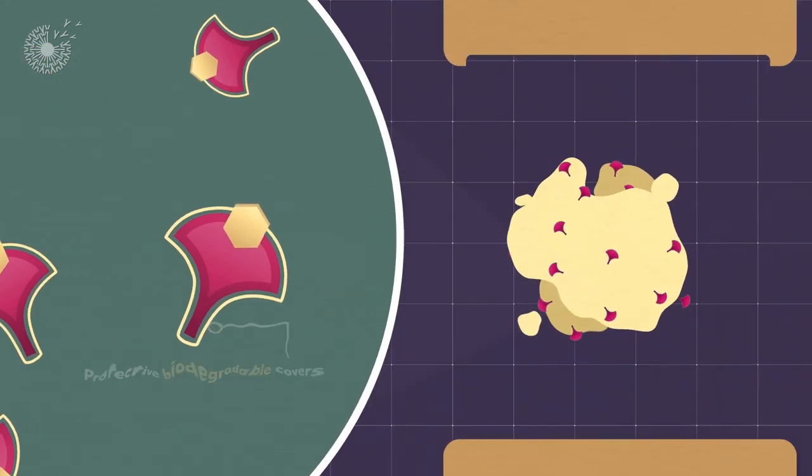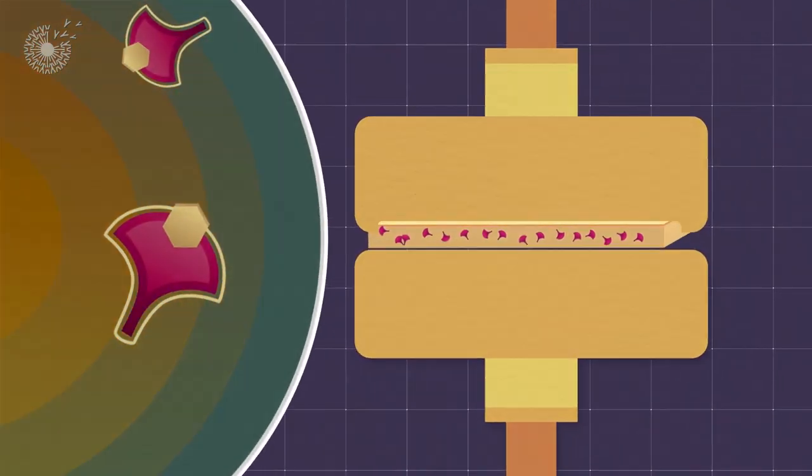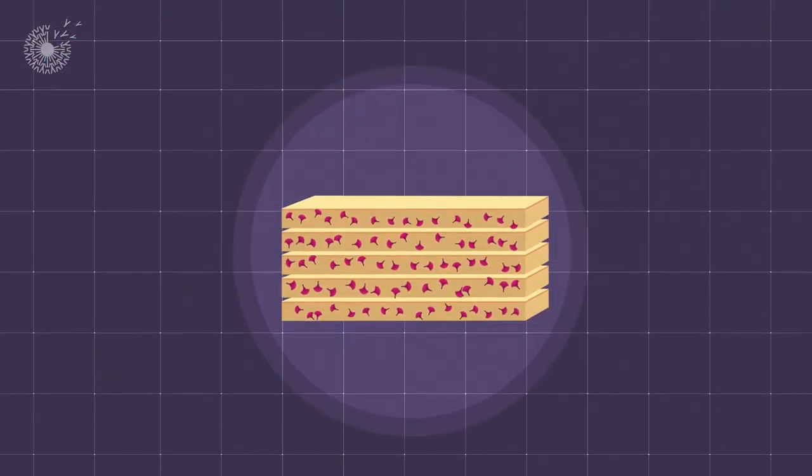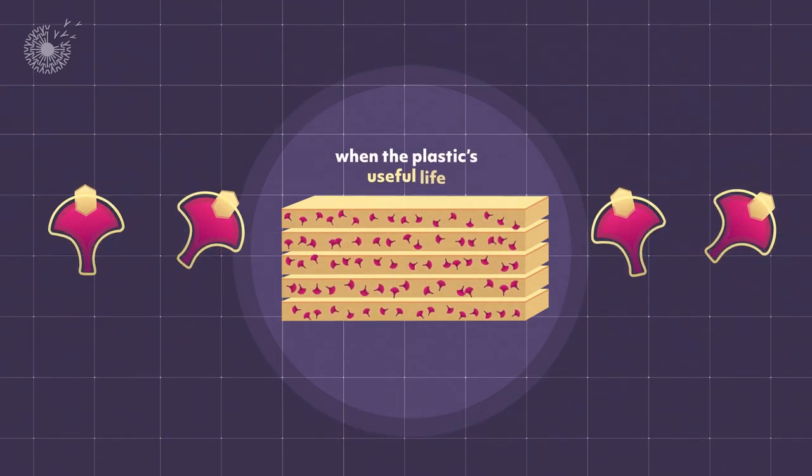The covers keep the enzymes from breaking when the plastic is melted and extruded to form sheets or other shapes. But they don't keep the enzymes from doing their job when the plastic's useful life has ended.